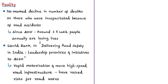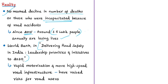The cold reality is that a marked decline in deaths or incapacitations from road accidents cannot be seen, since every year around 1.5 lakh people lose their lives in India due to road accidents — up from around 80,000 deaths in 2001. There is also a culture of indifference among states in this regard. The World Bank report titled 'Delivering Road Safety in India: Leadership Priorities and Initiatives to 2030' signals that rapid motorization and high-speed road infrastructure have raised risks for road users due to lack of proper road construction, maintenance, and traffic management.